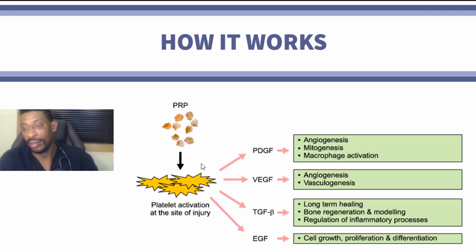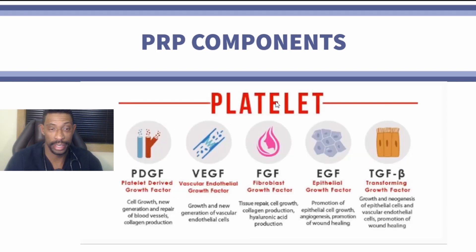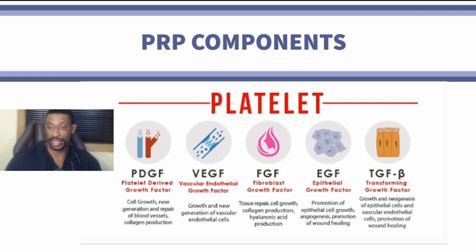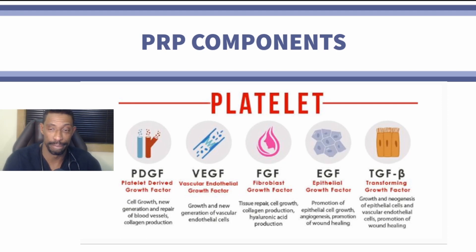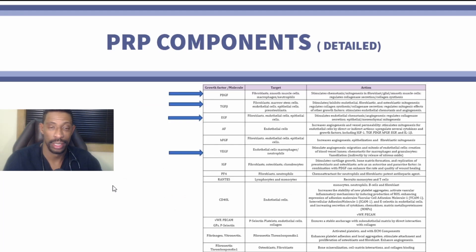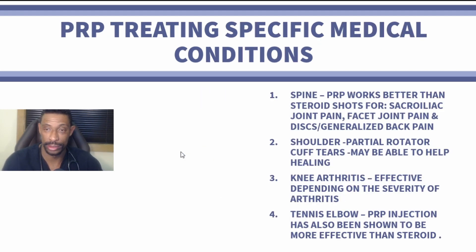So how does PRP work? PRP results in platelet activation, which then influences a number of different growth factors: platelet-derived growth factor, vascular endothelial growth factor, fibroblast growth factor, epithelial growth factor, and transforming growth factor. All of these impact the repair and regeneration of blood vessels, the proliferation of vascular and epithelial cells, and improved wound healing. PRP utilizes these secondary mediators to help improve healing, though there are many more factors and an interplay that influences healing in different ways.